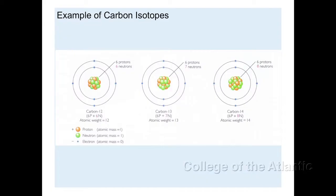For some background on stable isotopes, they're basically non-radioactive variants of elements. They're identical in all aspects except their number of neutrons, which give them different weights. The ratios of the different weighted isotopes are what give the signature that I mentioned earlier.